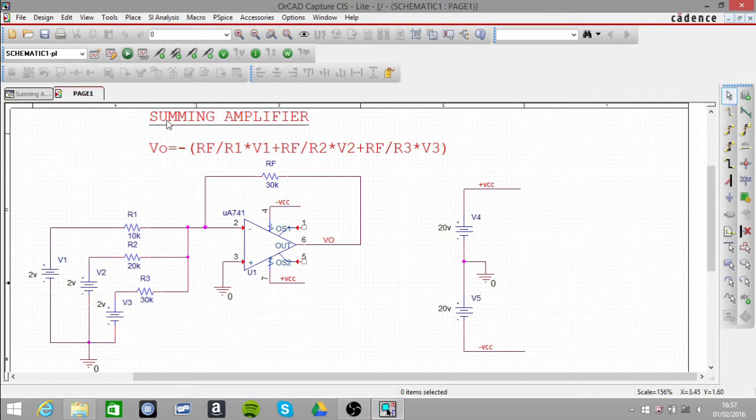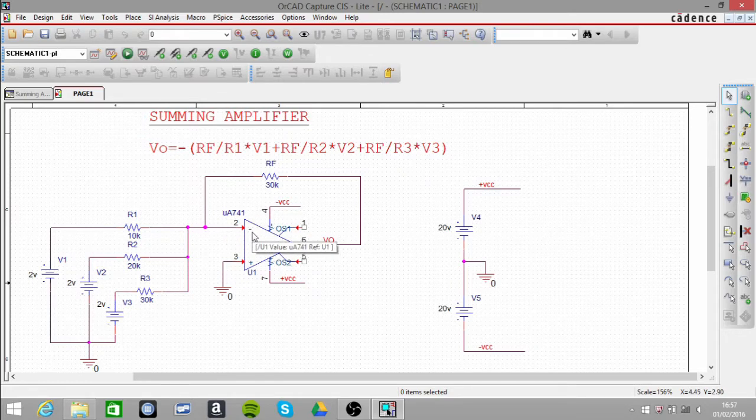In this circuit, I'm looking at the summing amplifier. This is the equation that we use to tell us what the output voltage is. So as you can see, it's basically the configuration of an inverting op-amp amplifier.